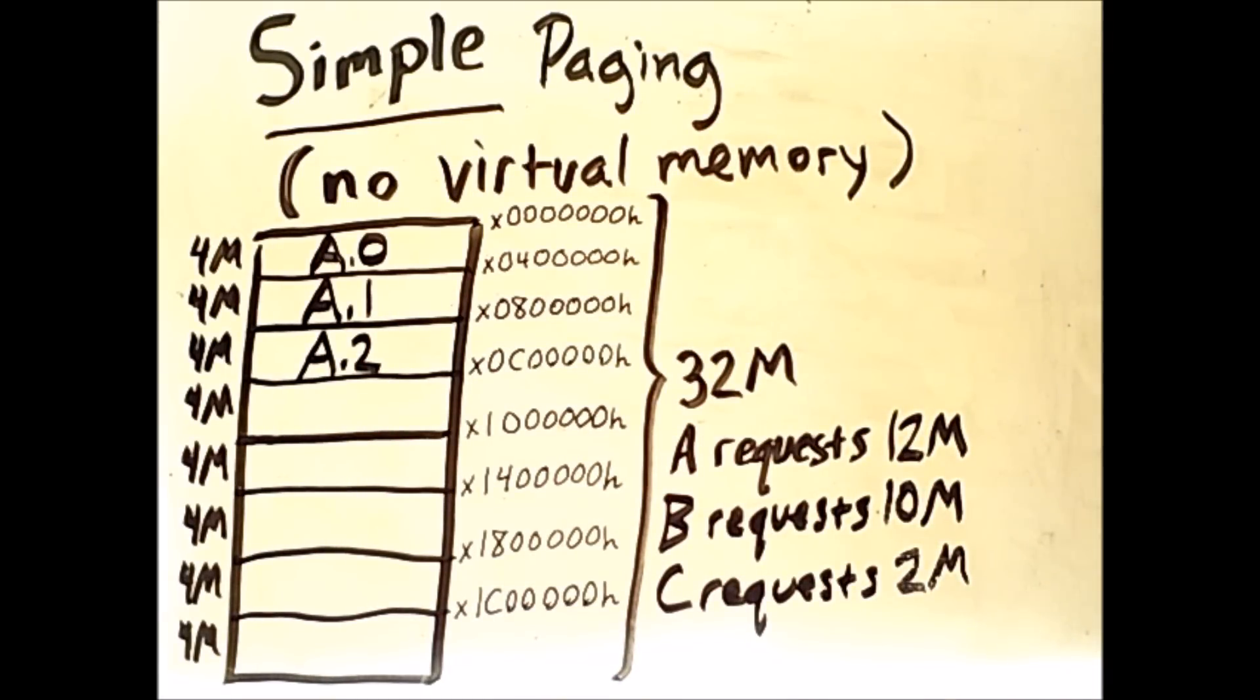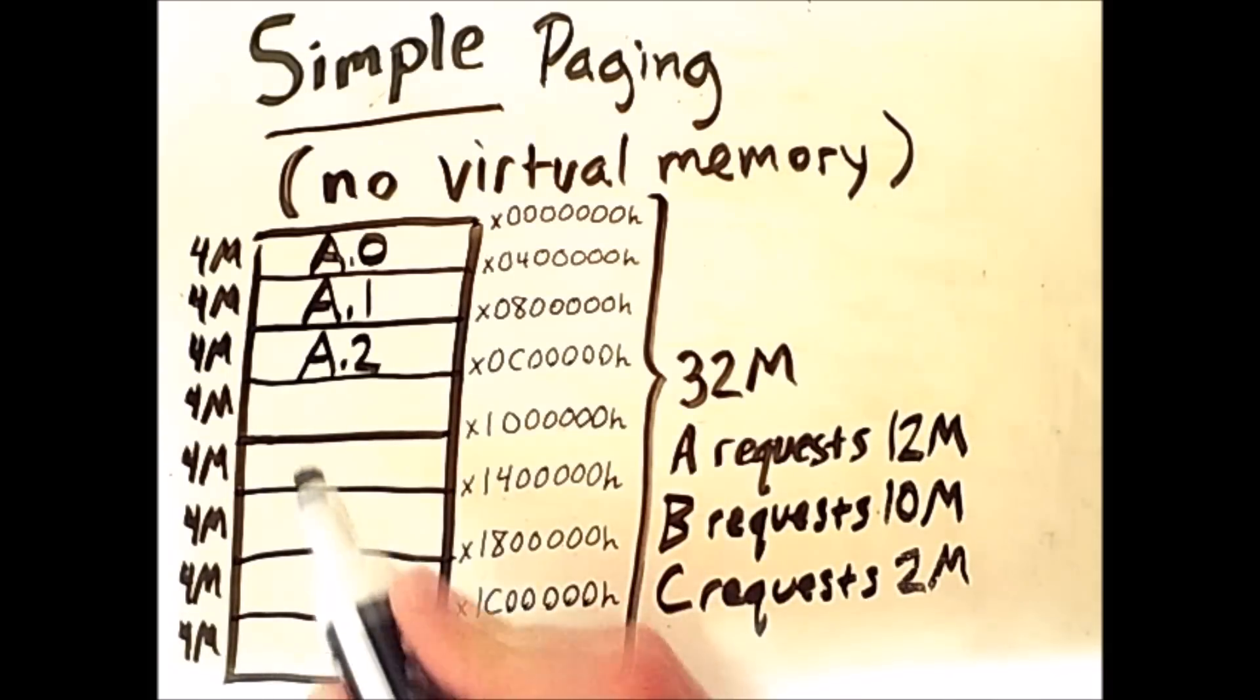Now, so far, it just looks like we're filling in memory sequentially, but later we'll see how things get more interesting once processes get removed. But for now, let's finish processing these requests. So B is requesting 10 megabytes of memory. This cannot be evenly divided by 4, so the first frame that is available here will contain the first 4 megabytes, the first page of B.